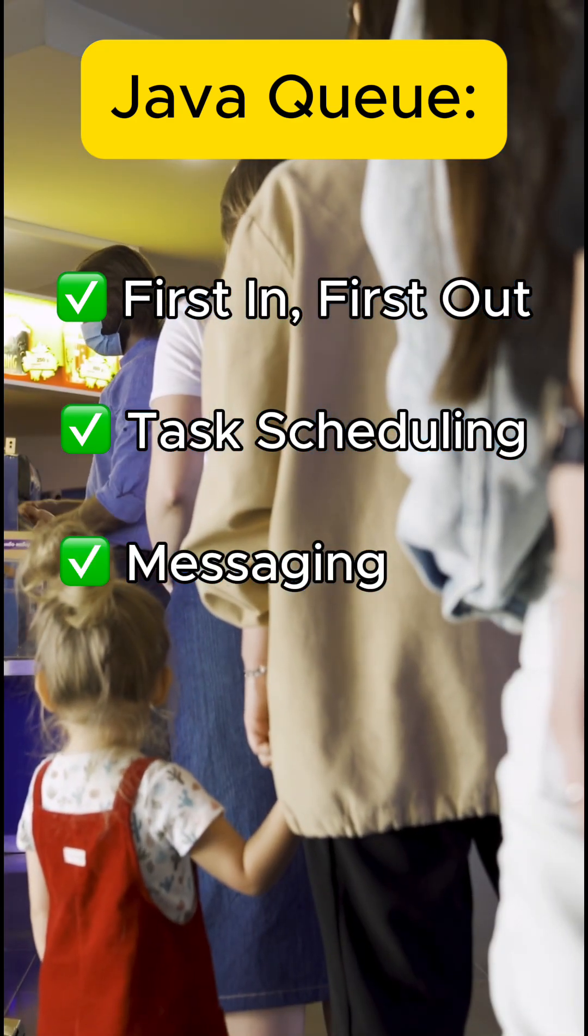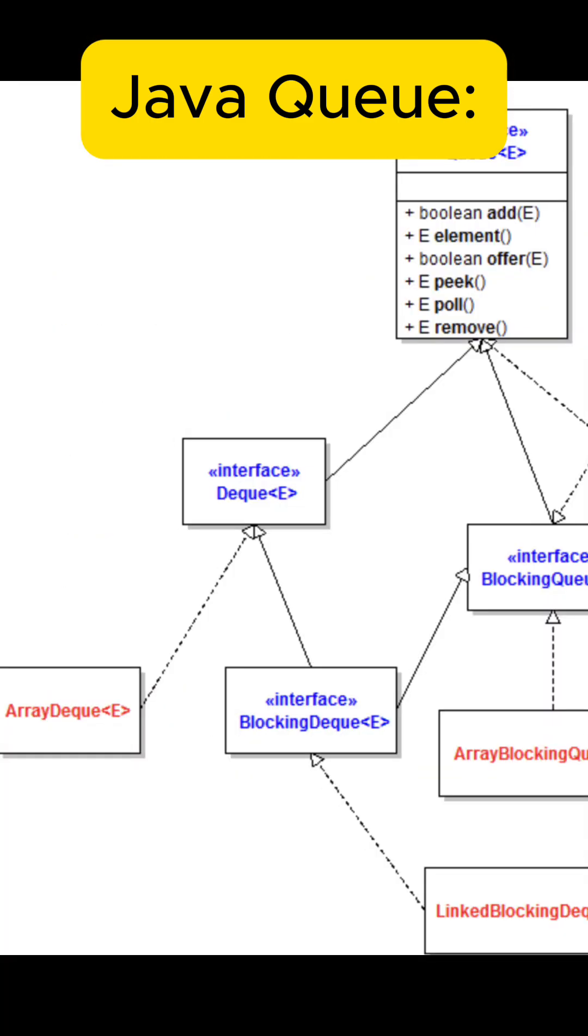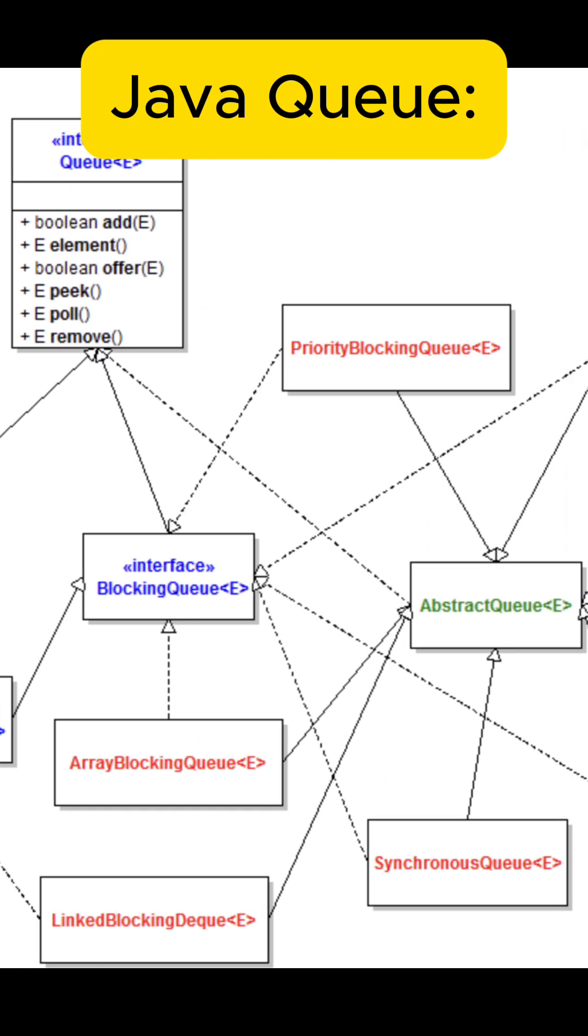Imagine customer service tickets. The first request gets handled first. Use LinkedList or ArrayDeque for basic queues, or PriorityQueue when you want to serve items based on importance.